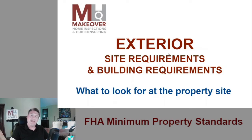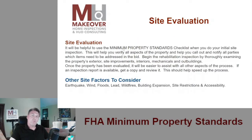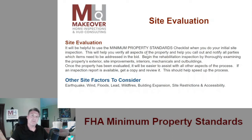What I like to do is always start with an exterior walk around to get a good handle on the condition of the property, look for any hazards, and look for any minimum property standards issues. We provide you with a minimum property standards checklist — kind of a cheat sheet that lets you check off all the items to look for: did you look at the roof, the grading, the vegetation, handrails, walkways, siding, exterior? Using that cheat sheet helps make sure you're not missing anything. After you've done this hundreds of times, it really becomes second nature.